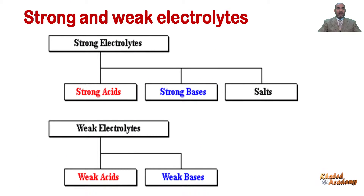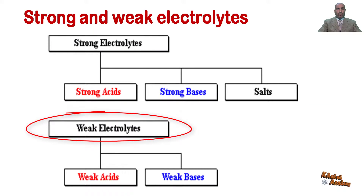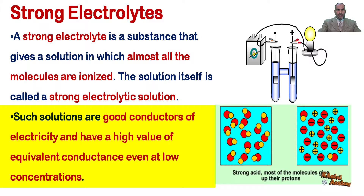Electrolytes may be divided into two classes: strong electrolytes and weak electrolytes. A strong electrolyte is a substance that gives a solution in which almost all molecules are ionized. The solution itself is called a strong electrolytic solution. Such solutions are good conductors of electricity and have a high value of equivalent conductance even at low concentrations.